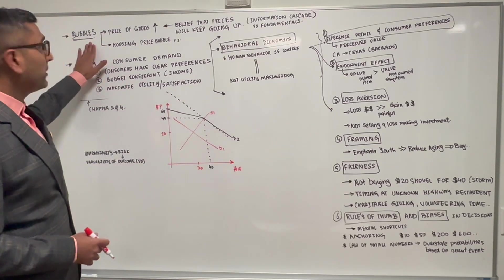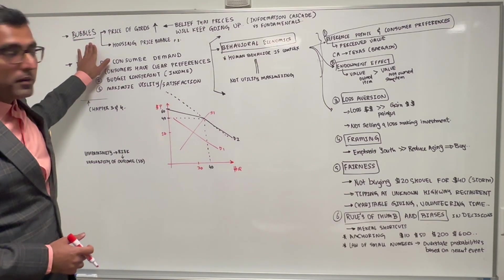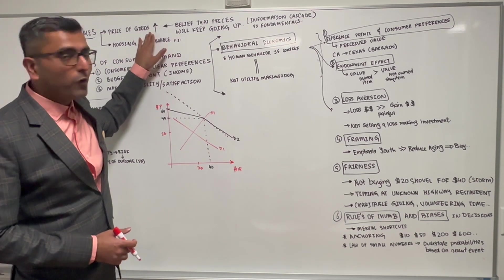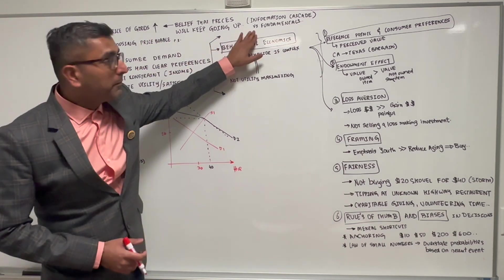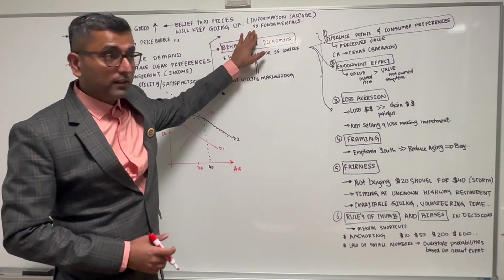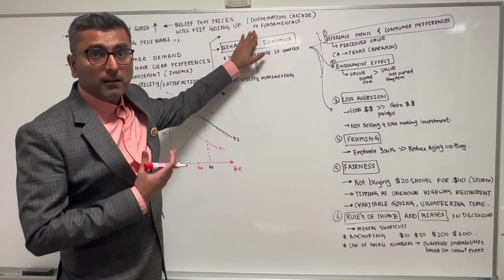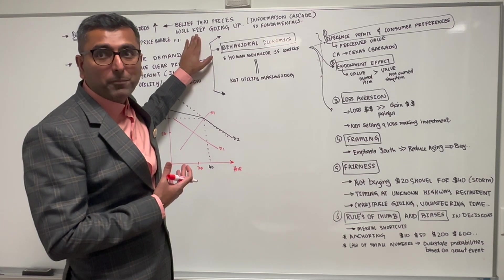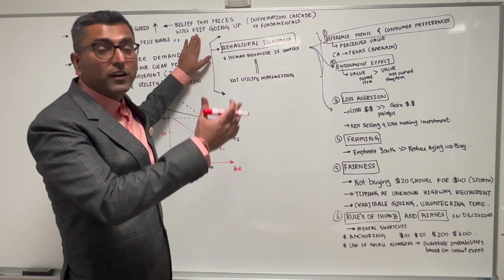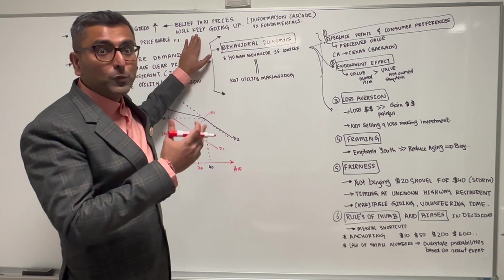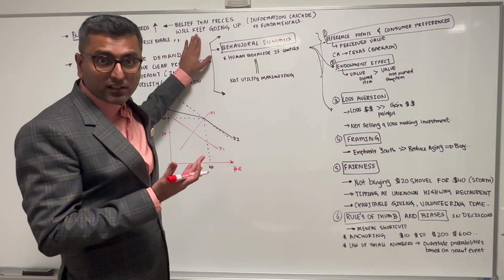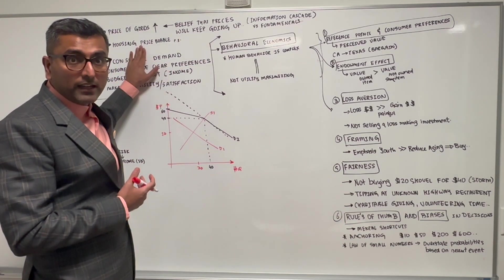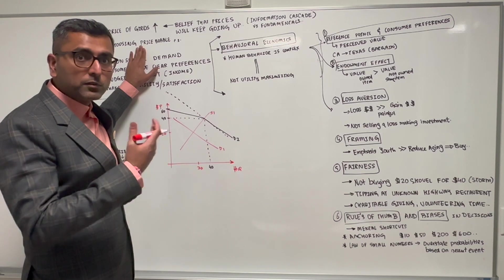Let's learn about bubbles. What is a bubble? A bubble is formed when for any asset the price of goods for that asset continues to go up not because of fundamental improvement in that asset, but because you have a belief that the price will keep going up. You expect that you will sell before the bubble bursts. There are lots of bubbles, like the housing market had a price bubble from 1999 to 2006-7.